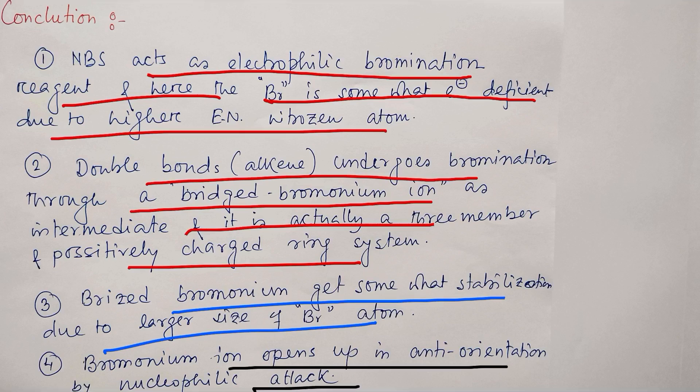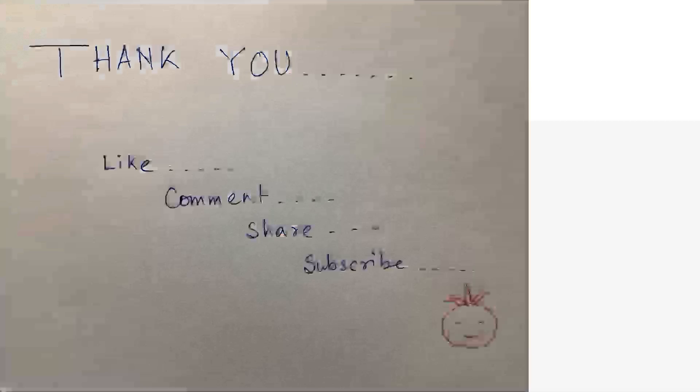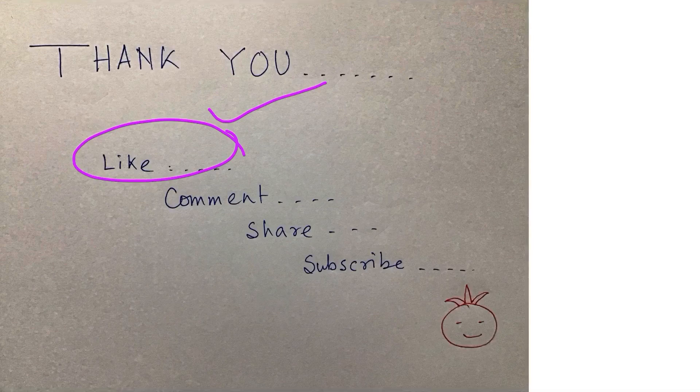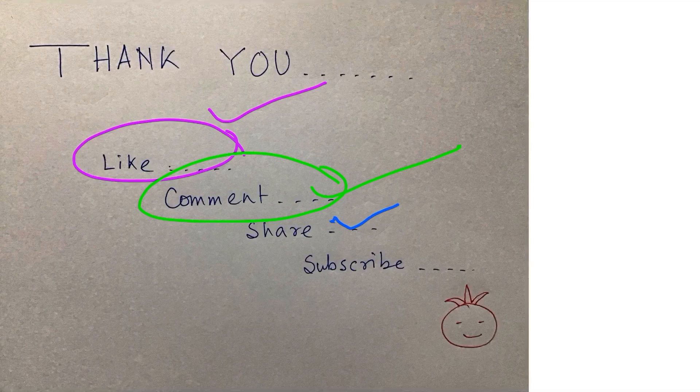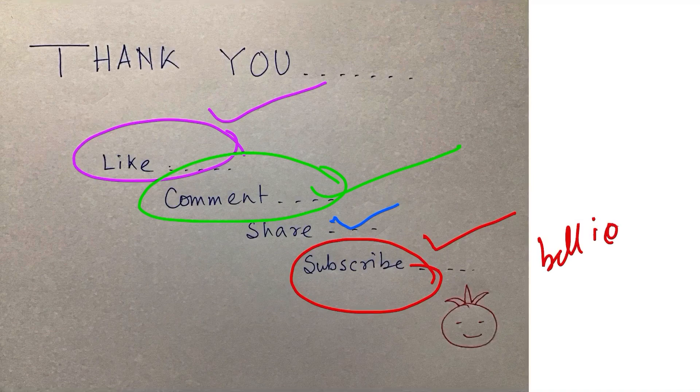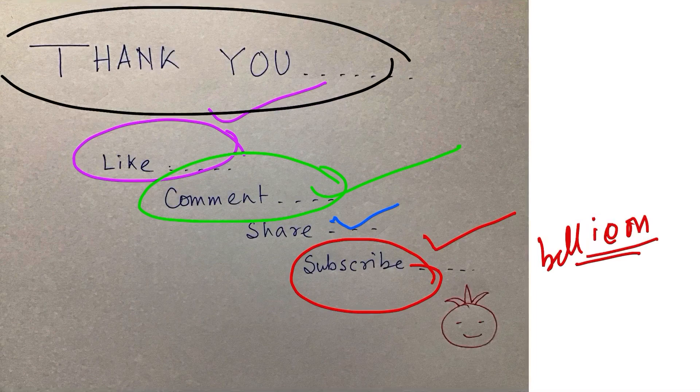And finally, bromonium ion opens up in anti-orientation by the nucleophilic attack. That's why we get the trans product. This is the overall discussion today. I think you may have enjoyed the video. If you enjoyed the video, please press the like button and please write your opinion in the comment box. Most importantly, please share this video if you think this video has good content. If you consider that I'm providing good quality study material, then please subscribe to my channel, Chemistry: The Mystery of Molecules, and please press the bell icon to get the notification of every single video I upload. Most importantly, thank you all for watching this video with patience. Before leaving, stay happy, stay blessed.